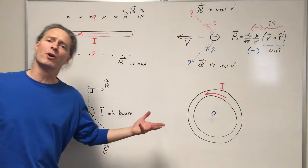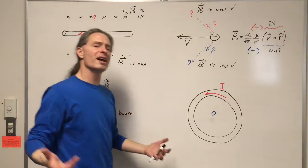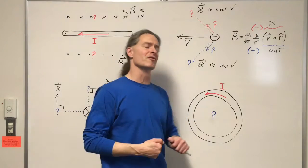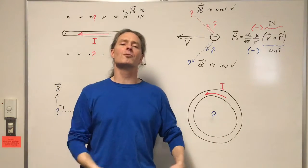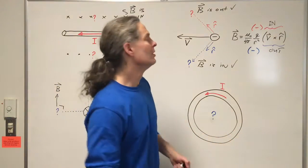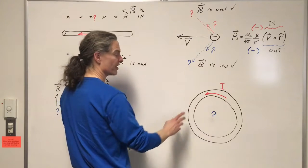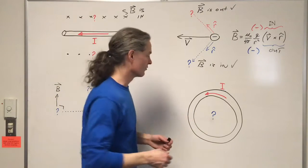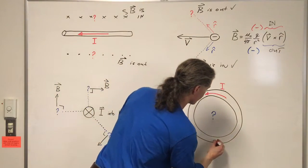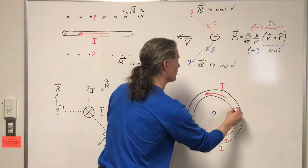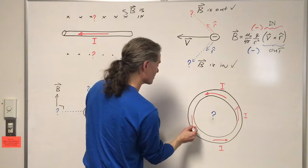We have one more example left. In this case, we've got a current loop. There are a couple of ways to do this. We could use the derived right-hand rule for a segment of current and look at a couple of representative segments of this loop. So this current going like this means I've got a current this way, the same current this way, and at any given point around the loop the current could be this way or that way. Let's look at a couple of those representatively.